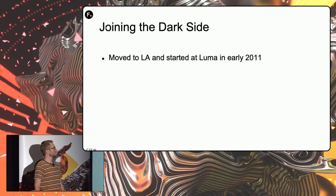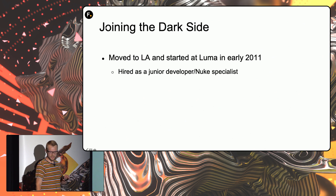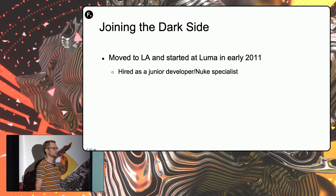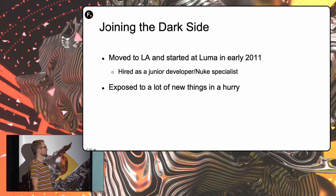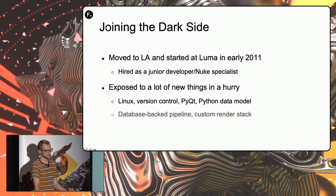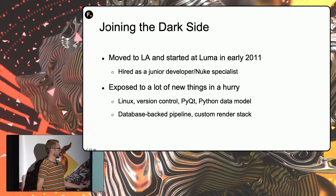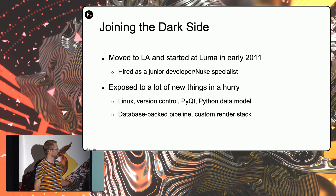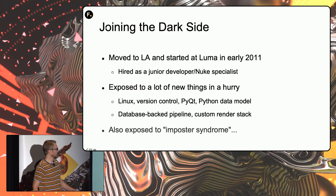In 2011, I moved to L.A. and started working at Luma as a junior developer and a Nuke specialist. They didn't have anyone with a lot of Nuke experience — they were fairly recently off the transition from Shake, which was still kind of hanging around, refusing to die. Starting as a developer, I was quickly exposed to a lot of new stuff: large concepts like Linux, version control, and Python's internal data model, to more site-specific details like using a relational database to back an entire pipeline or a custom render submission and execution stack. Being part of a team added a quick feedback loop for taking on new information. I was also exposed to imposter syndrome pretty early on — that's one of those things that just refuses to die.